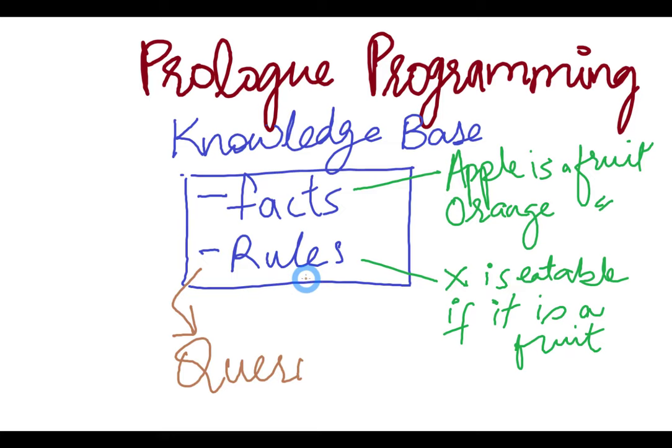For example, we can make a query asking whether orange is eatable or not. We have a fact for orange and we have a rule. The rule says that anything X is eatable if it is a fruit, so we will see whether orange is a fruit or not and get an output of true or false. If orange is a fruit, that means it is eatable. That's just a gist of it — let's see the syntax and how to implement and write a Prolog program.